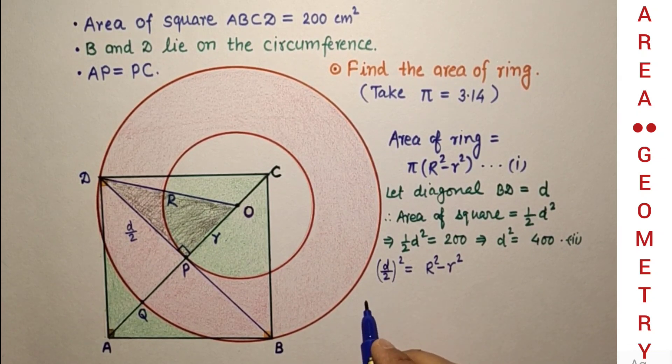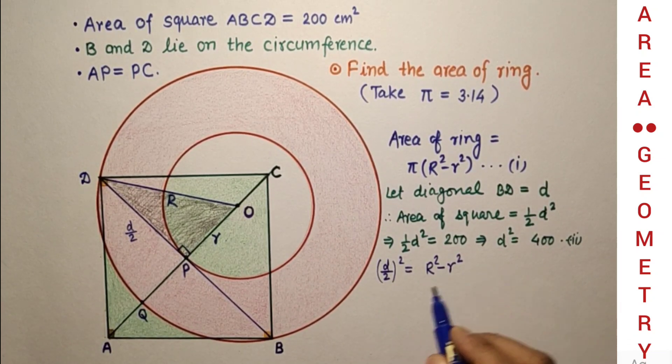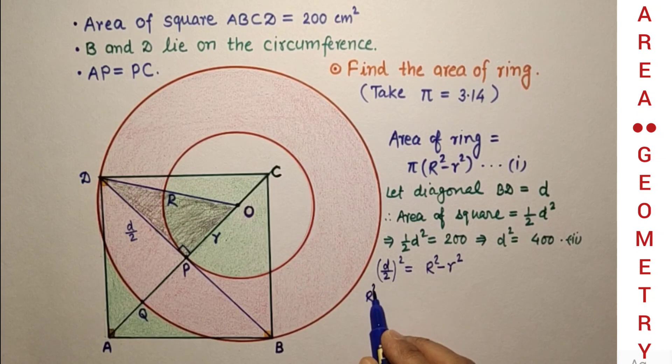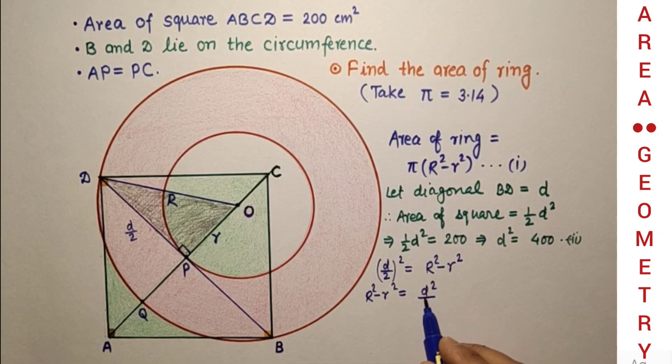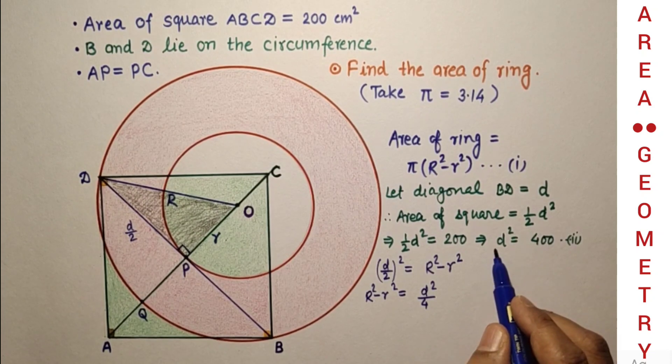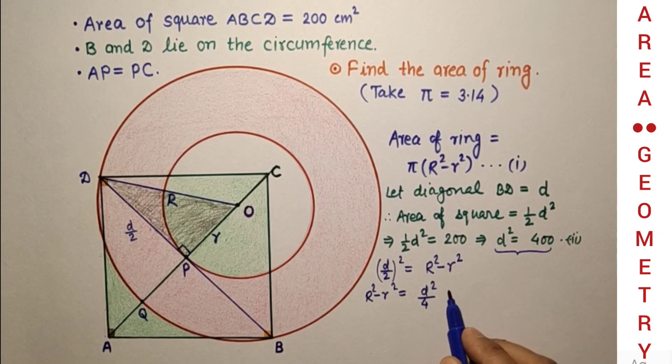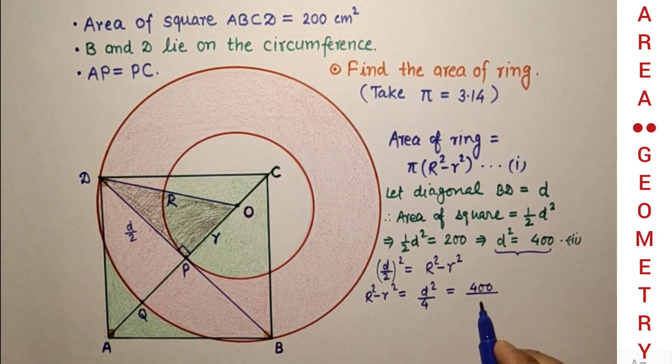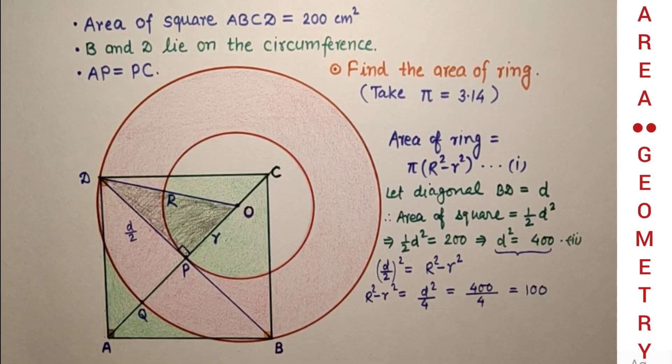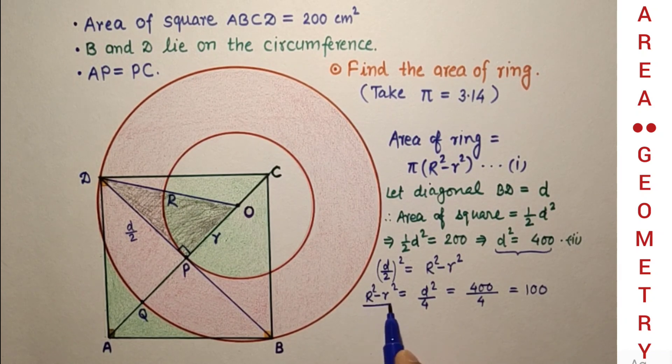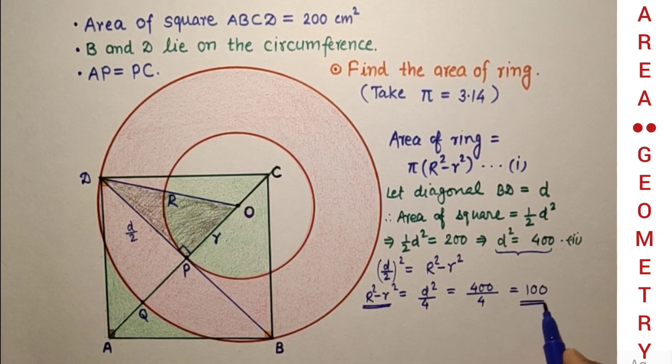This means R² - r² = d²/4. We found d² as 400, so that is 400/4, which is 100. So R² - r² = 100.